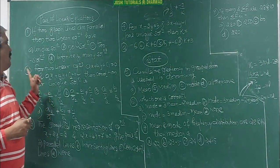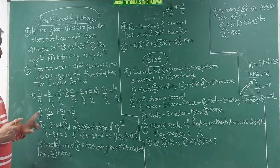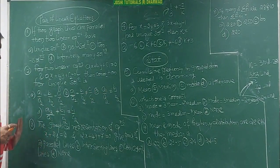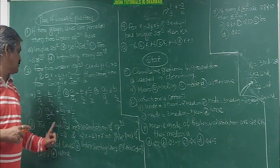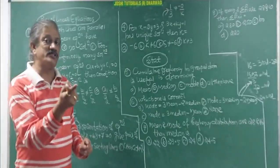For unique solution, not equal. And for the graph having parallel lines, a1 by a2 is equal to b1 by b2 is not equal to c1 by c2.